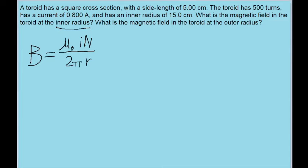First let's look at the inner radius. Capital N is just 500 turns, as given by the problem. I is also given by the problem as 0.8 amperes. We also have the inner radius, which is given as 15 centimeters, or in SI units, that's 15 times 10 to the power of negative 2 meters.